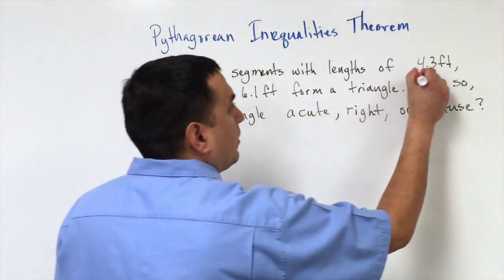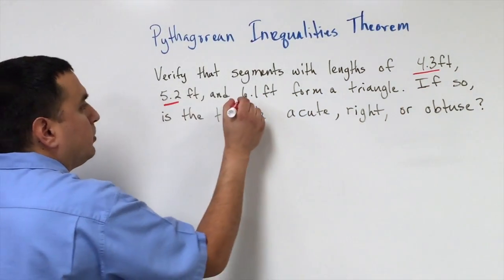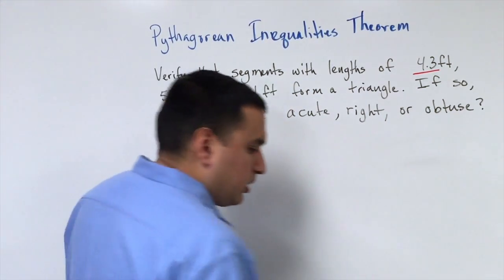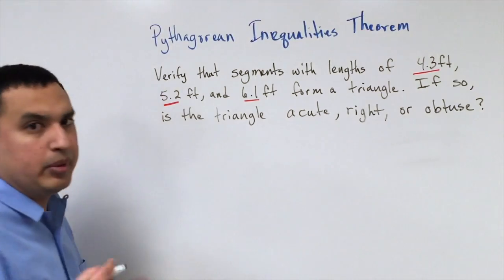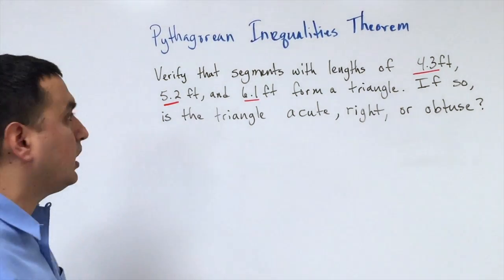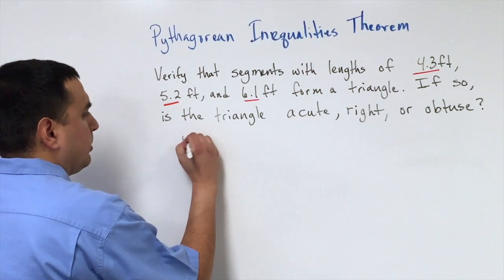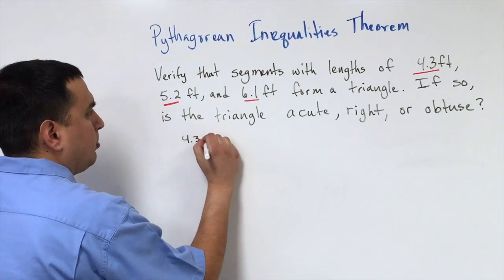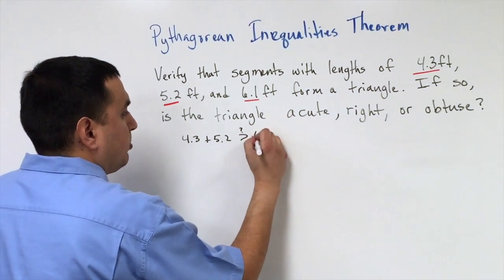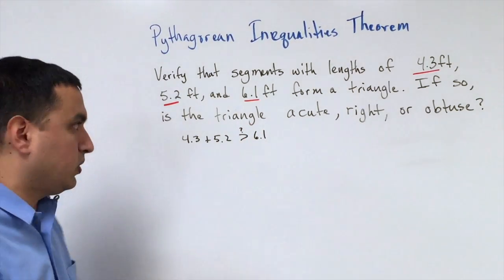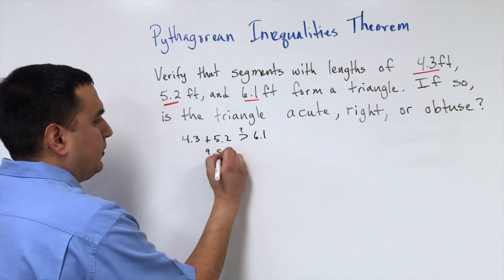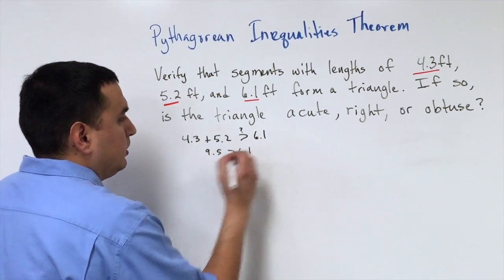In this problem, here's our dimensions. We got 4.3, 5.2, 6.1. Now in a problem like this, you always want to check if it's going to make a triangle in the first place. Remember that I can add any two sides and it's got to be greater than the third side. So is 4.3 plus 5.2 greater than 6.1? Which of course is going to be. This would come out to be 9.5, which is greater than 6.1.